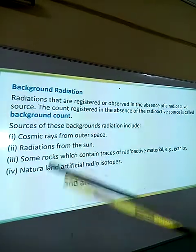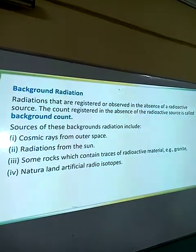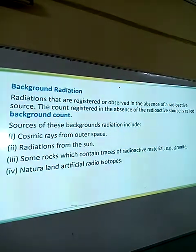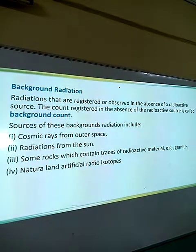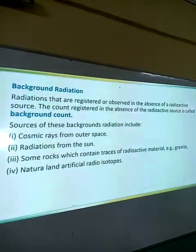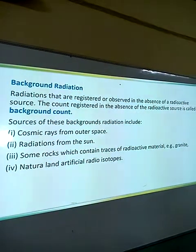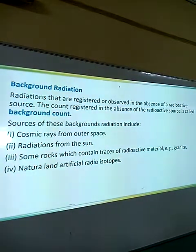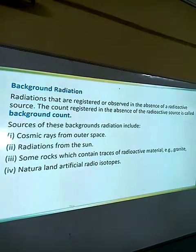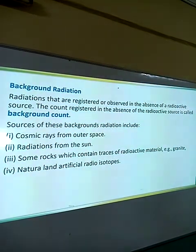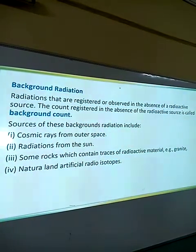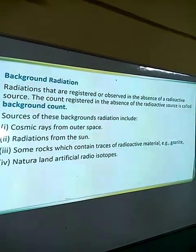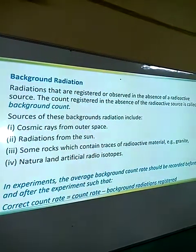What causes background radiation? There are four causes. The first is cosmic rays from outer space. Radiations from the sun may also cause background radiation. Then we have rocks like granite that contain traces of radioactive material — they are present anywhere and will make the rate meter register some values without bringing an actual radioactive source. Finally, we have natural and artificial radioisotopes — isotopes that either occur naturally or are man-made.